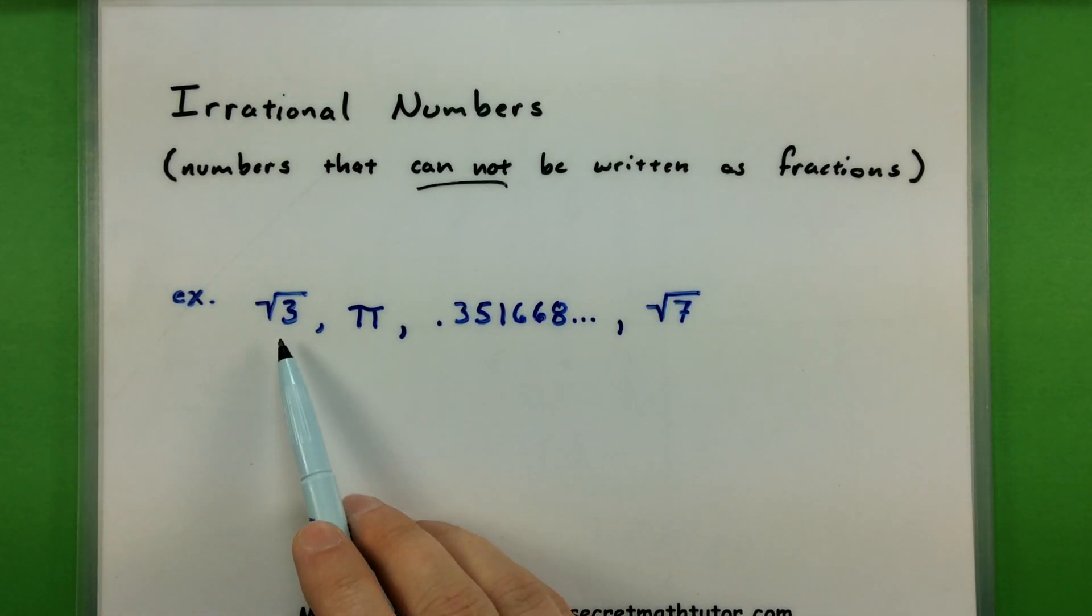You'll see numbers in this category like the square root of 3. That one I can't write as a fraction. Or numbers like pi. Again, that one it has a decimal that goes on forever and ever and it doesn't ever repeat. So there's no way I can end up writing it as a fraction.